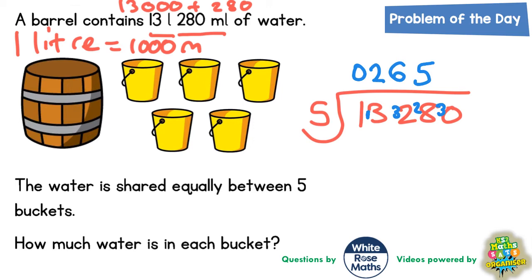And that remainder of three now makes 30. Fives into 30 goes exactly six times. So your final answer is 2,656 millilitres. 2,656 ml.